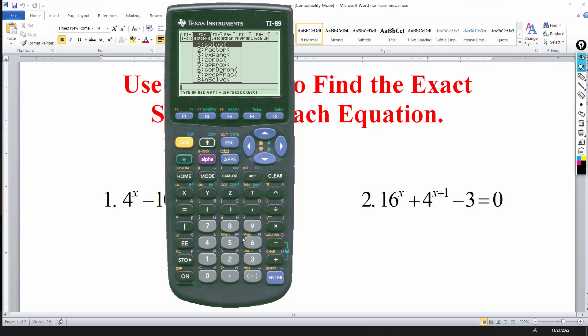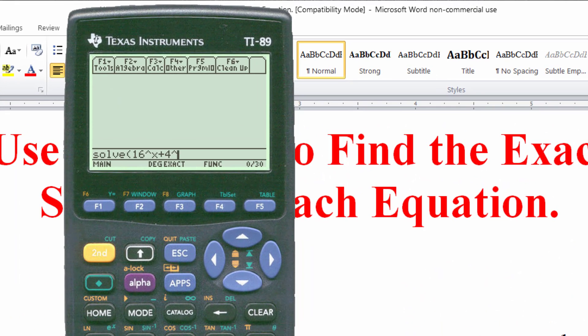So this will be 16 to the x power. So this will be x plus 4 exponent. Again I'm going to put parentheses here. x plus 1 close parentheses minus 3 equal to 0 and then a comma to indicate the variable I'm using.